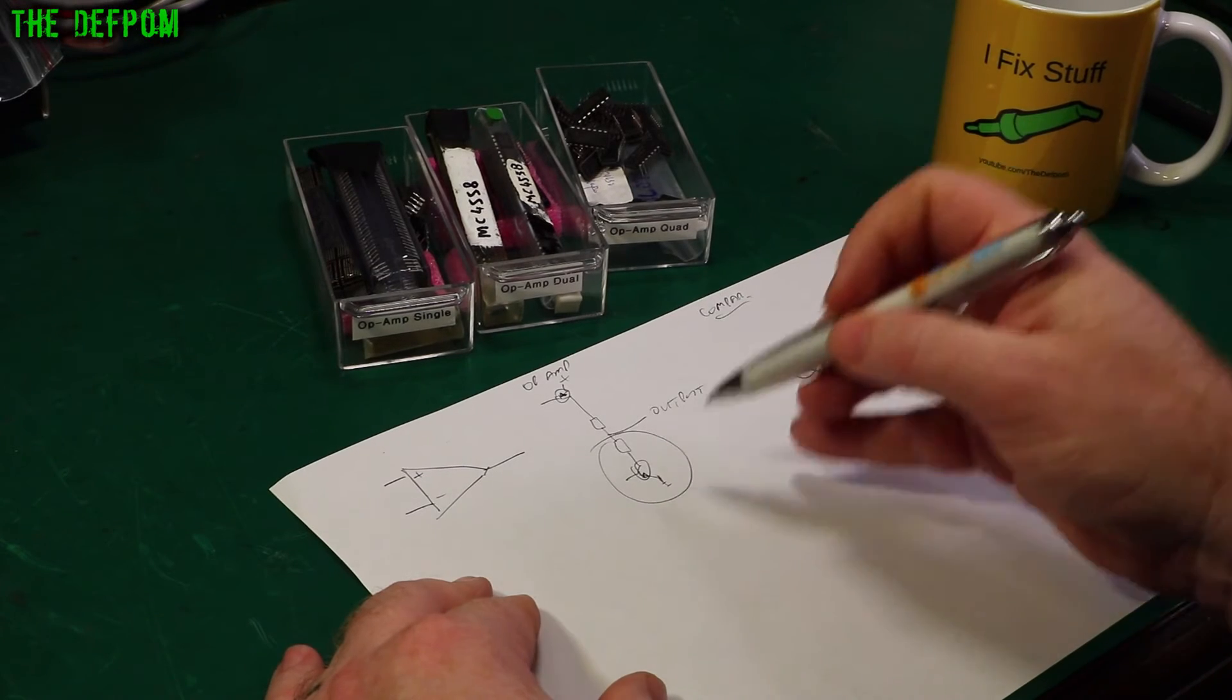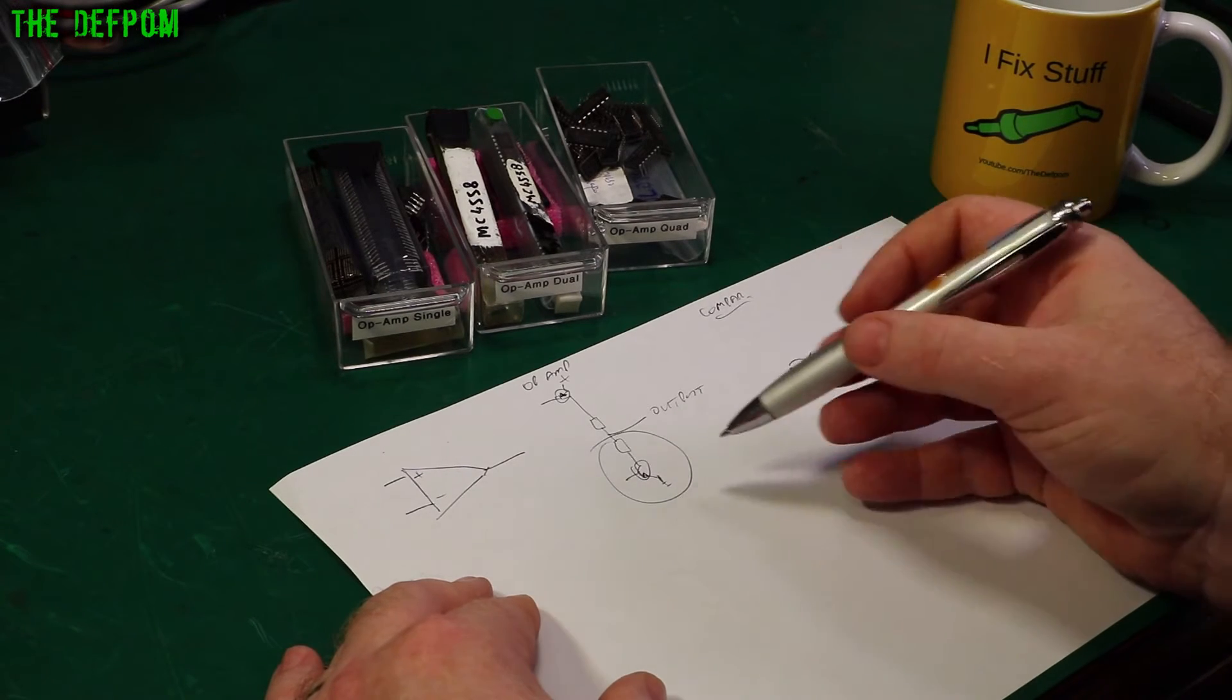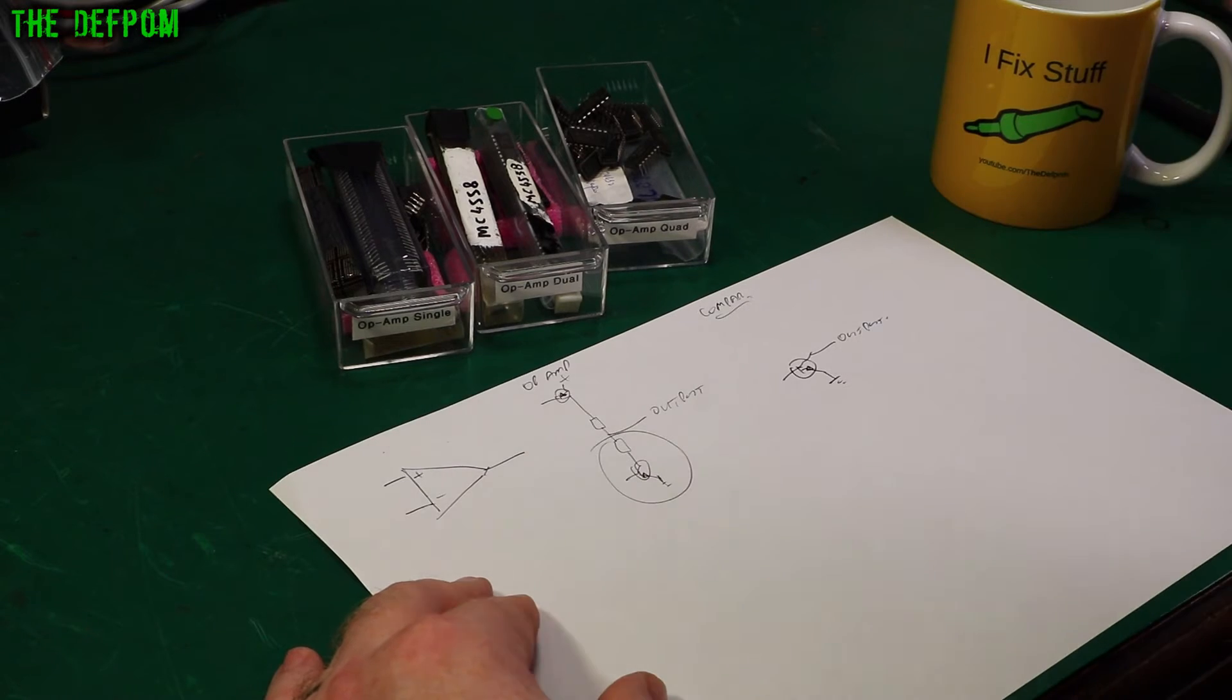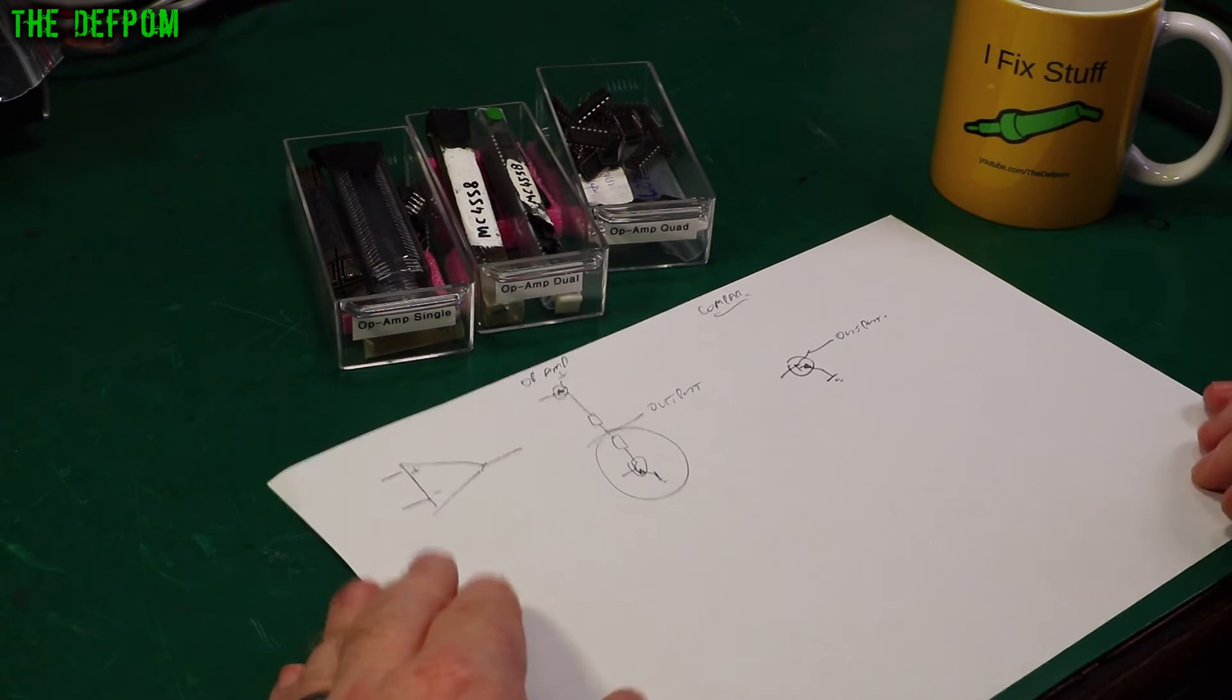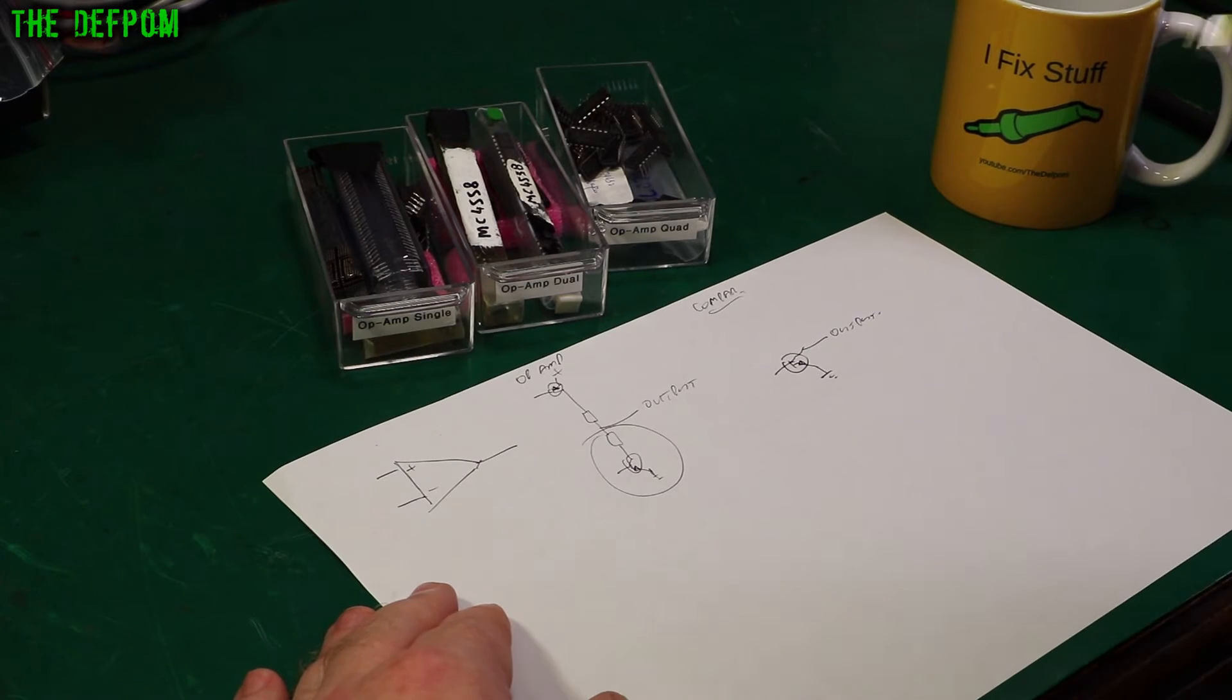Op-amps sometimes don't even like to work in a saturated region. If you are switching the output in an on-off fashion some op-amps don't even like that. It can actually damage them and they can overheat because they're not really designed to work that way. If you're switching high low state use a comparator.